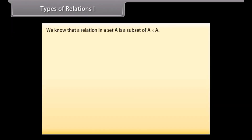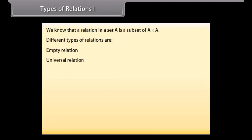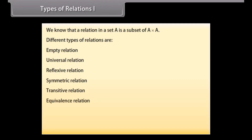Types of relations: We know that a relation in a set A is a subset of A cross A. Different types of relations are: empty relation, universal relation, reflexive relation, symmetric relation, transitive relation, and equivalence relation. Let us go through them one by one.